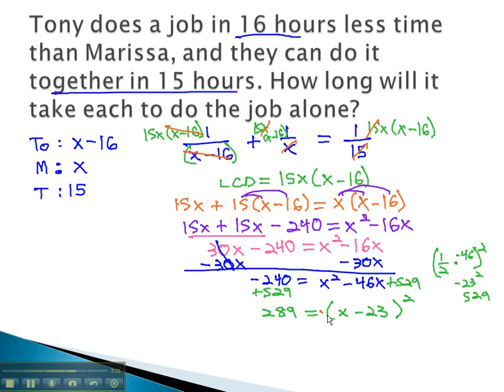We can then start solving by taking the square root of both sides. The square root of 289 is 17, plus or minus, equals x minus 23. Adding 23 to both sides, we get x equals 23 plus or minus 17. We do have to consider both possibilities. If we do 23 plus 17, we end up with 40. If we do 23 minus 17, we end up with 6. We have two possibilities for x, or for Marissa.